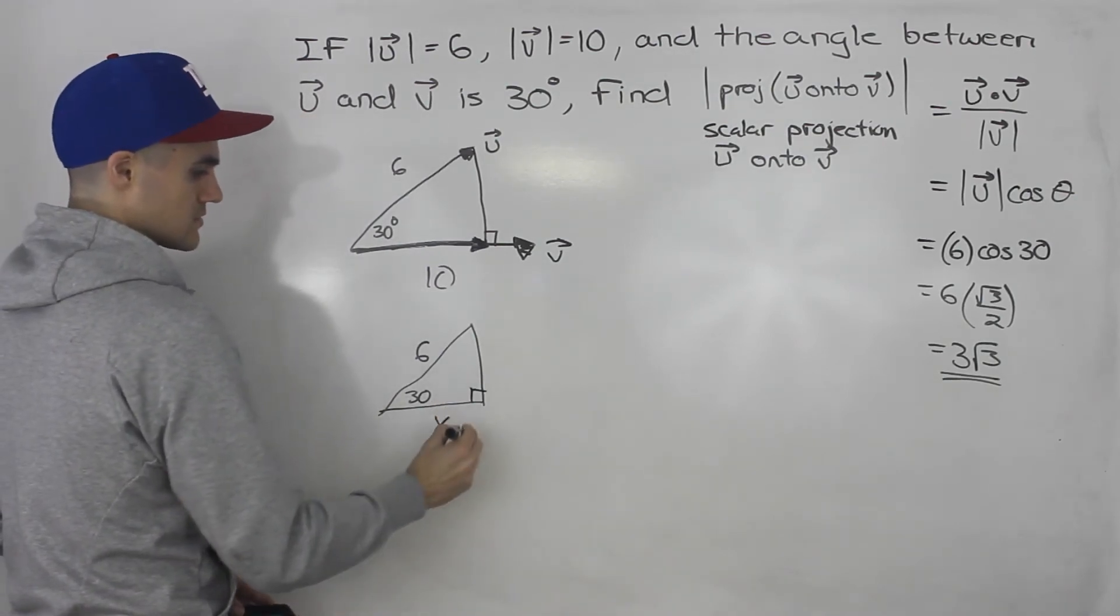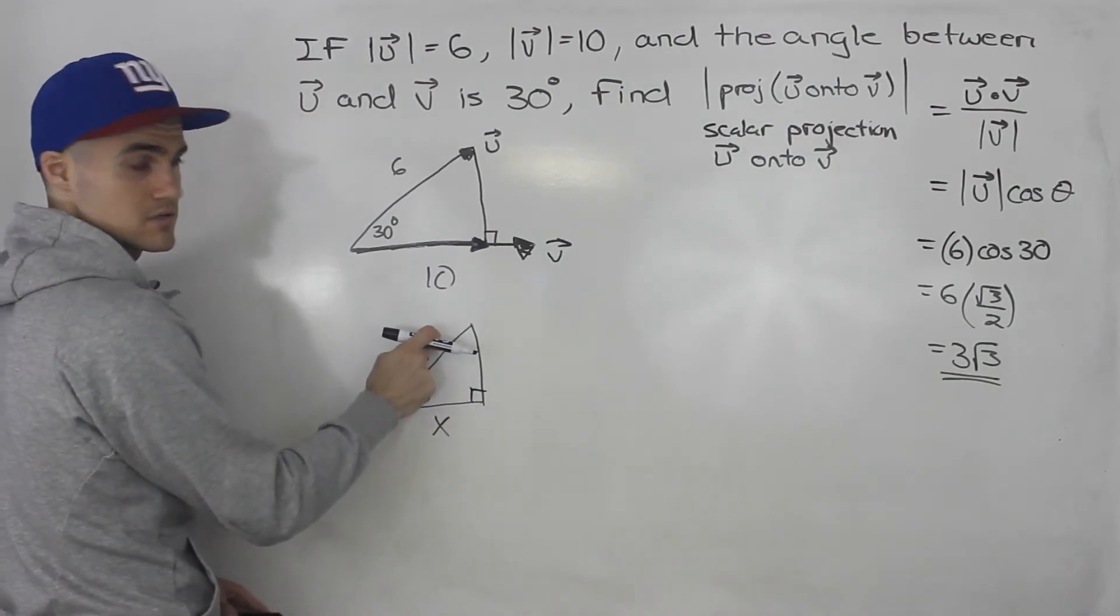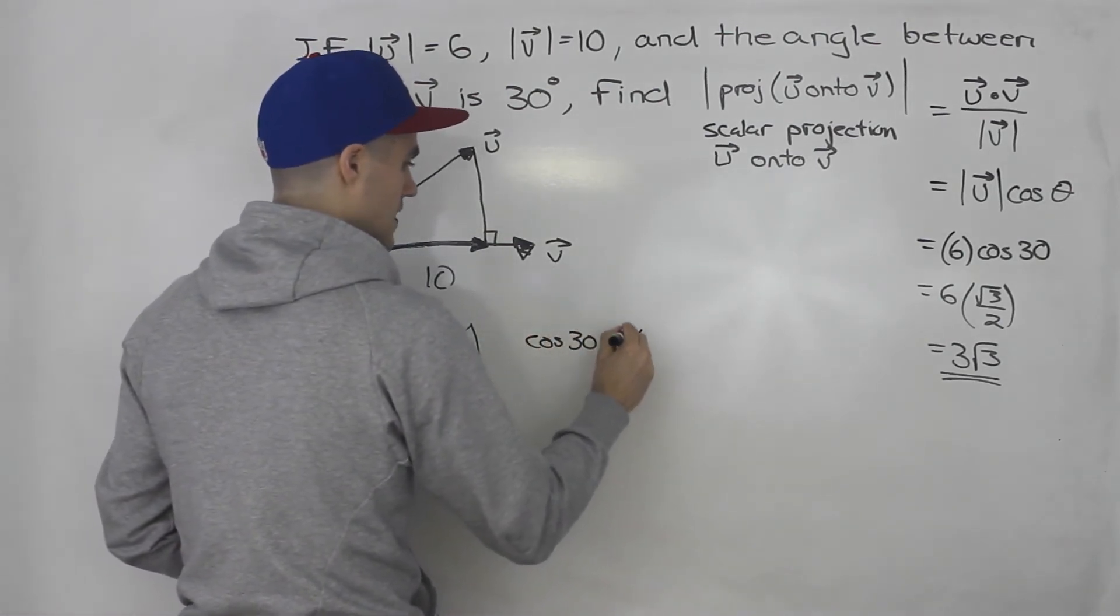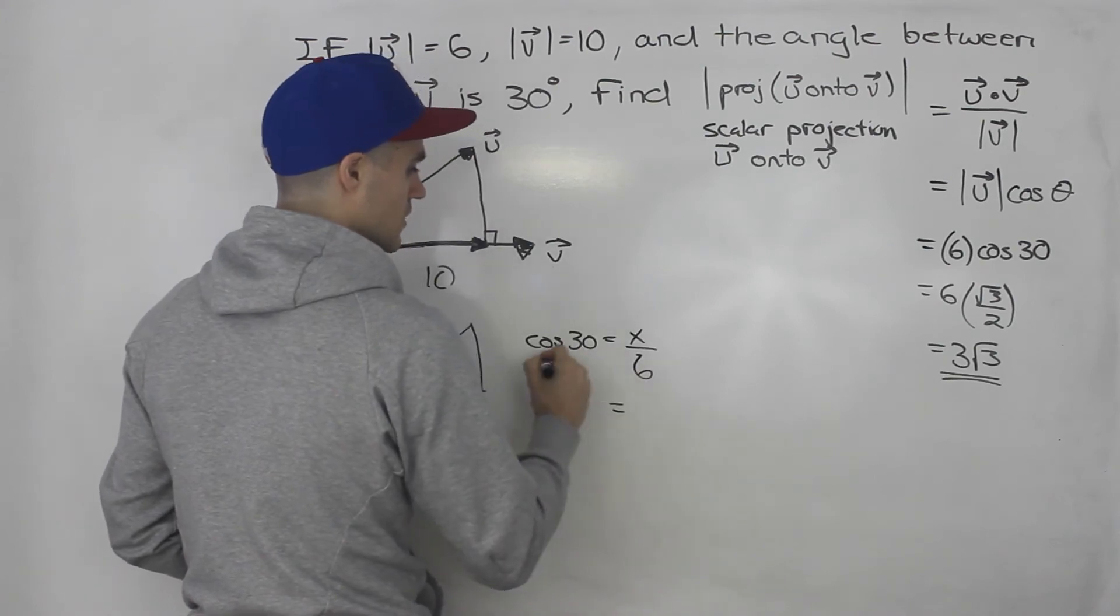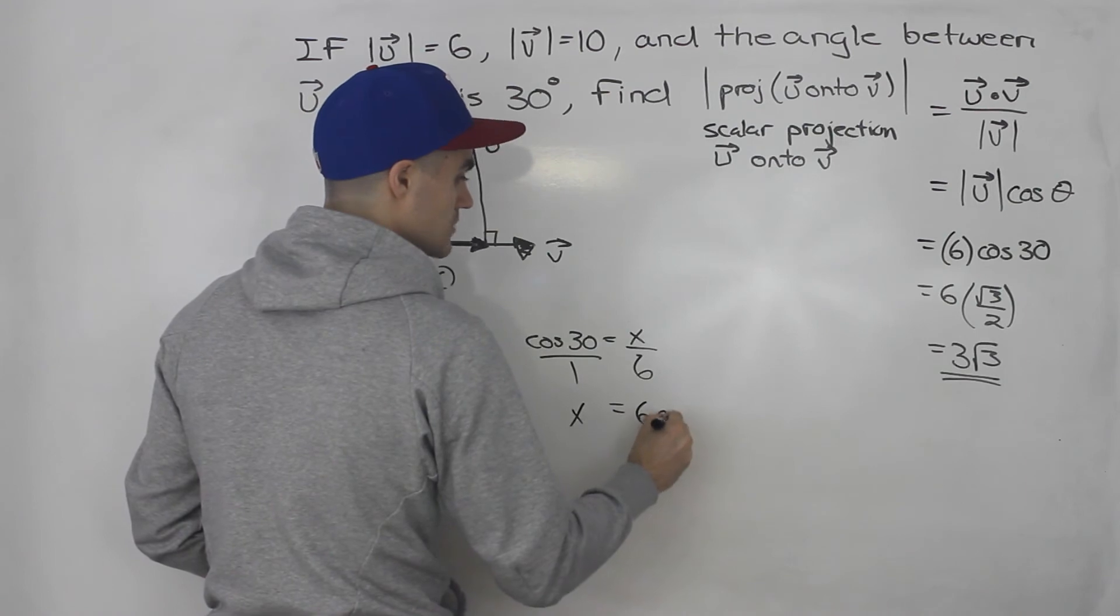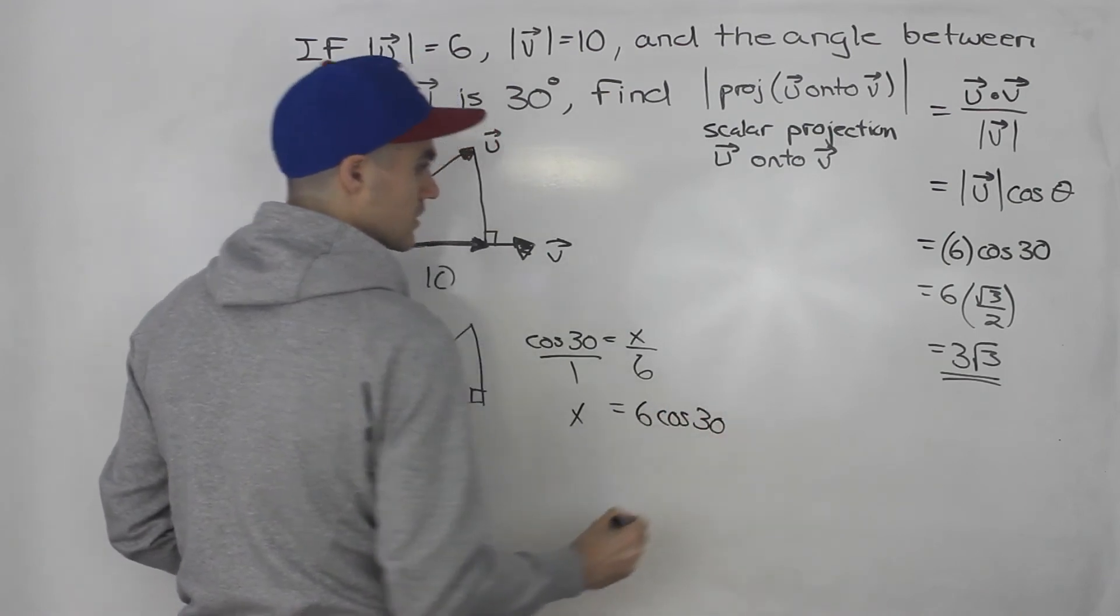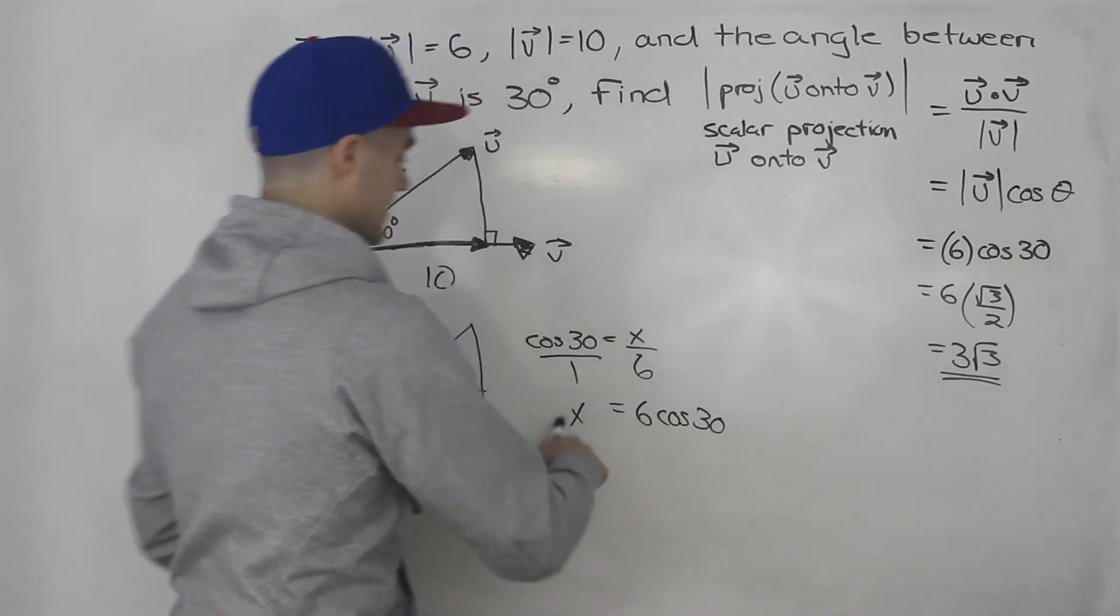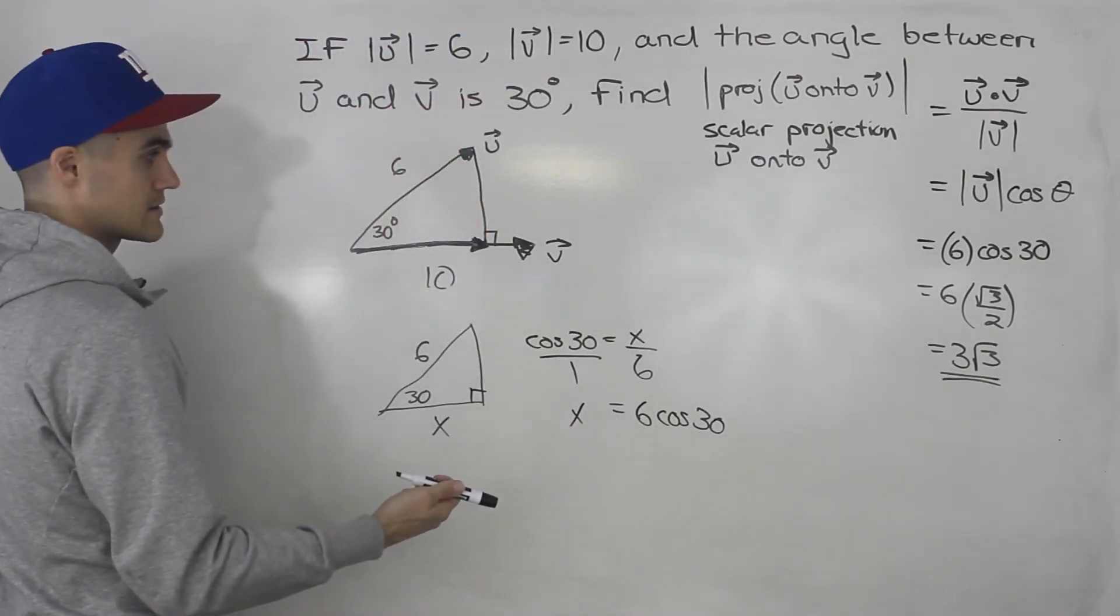So notice we have the adjacent, the hypotenuse. So cos of 30 is equal to x over 6. And if we isolate for x, cross multiply, basically x is equal to 6 times cos 30, which is what we got right there. So that's how that formula is derived.